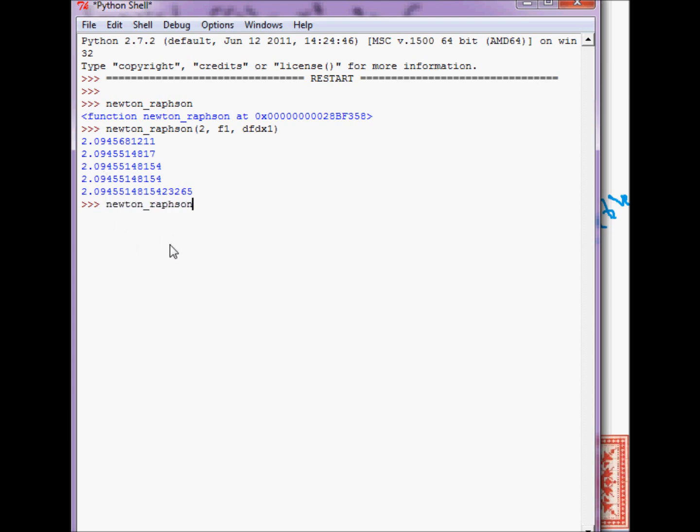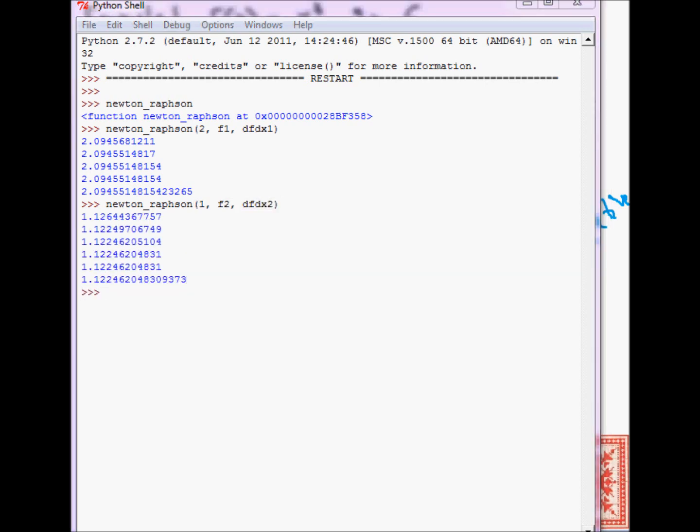And let's apply it to the second example, initial guess 1, f2, df dx 2. So that's the final approximation: 1, 2, 3, 4, 5, 6. So it takes 6 guesses.